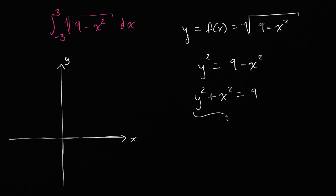And you might recognize this as a circle centered at origin with radius equal to 3, the square root of 9. So radius is equal to 3, centered at the origin.